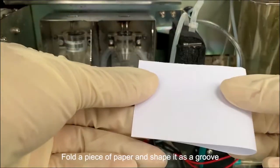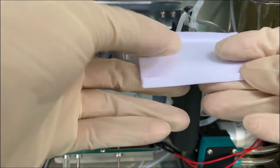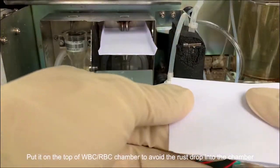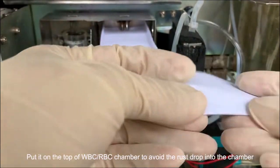Fold a piece of paper and shape it as a groove. Put it on the top of WBC/RBC chamber to avoid the rust drop into the chamber.